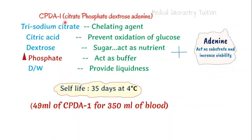Another is CPD-A1 — citrate phosphate dextrose adenine. In ACD we have trisodium citrate, citric acid, dextrose, and distilled water. In CPD we have additional phosphate. Now in CPD-A1 we add adenine, which acts as a substrate and increases the viability of our RBCs. In CPD-A1 we can store blood for 35 days at 4°C. We similarly take 49 ml of CPD-A1 for 350 ml of blood.